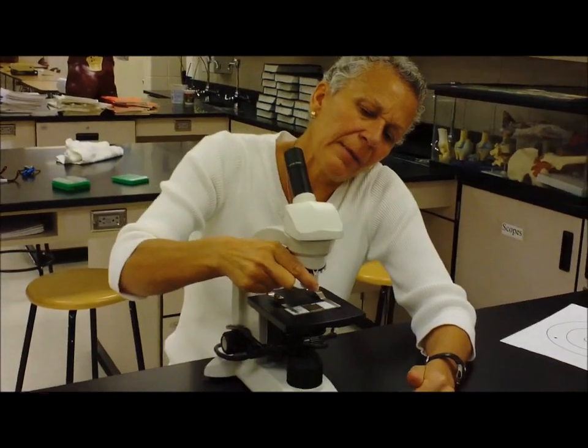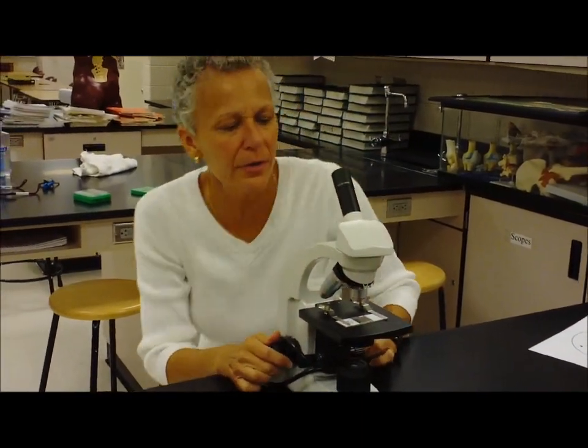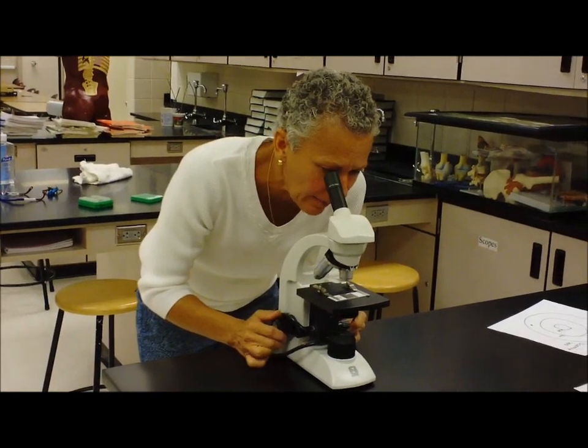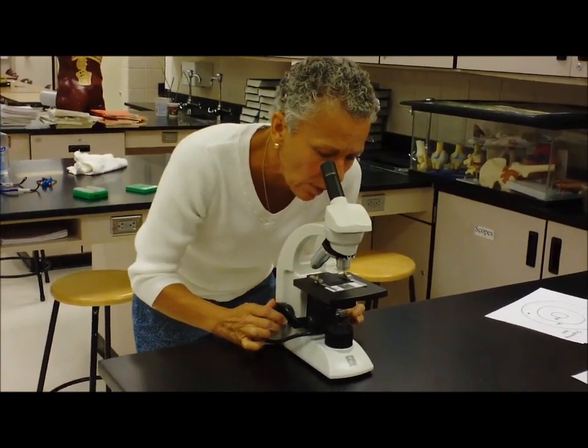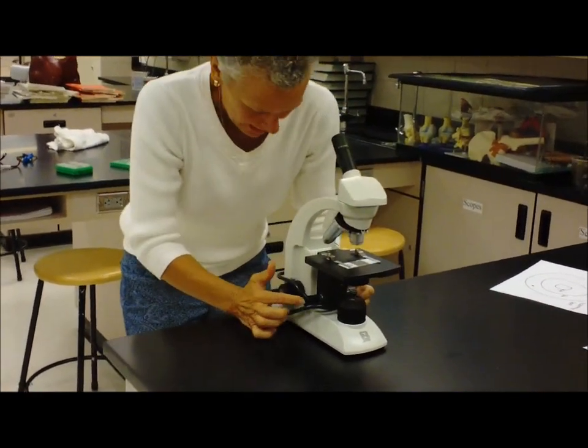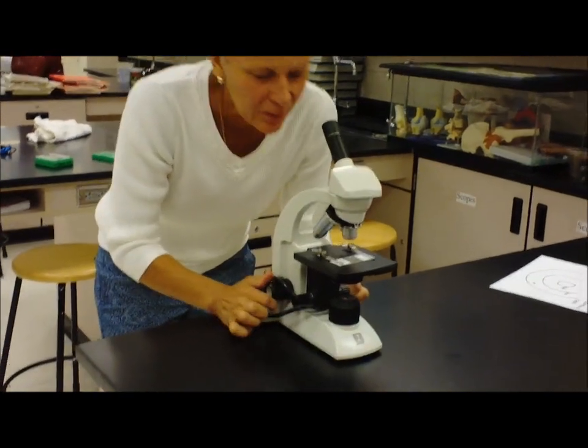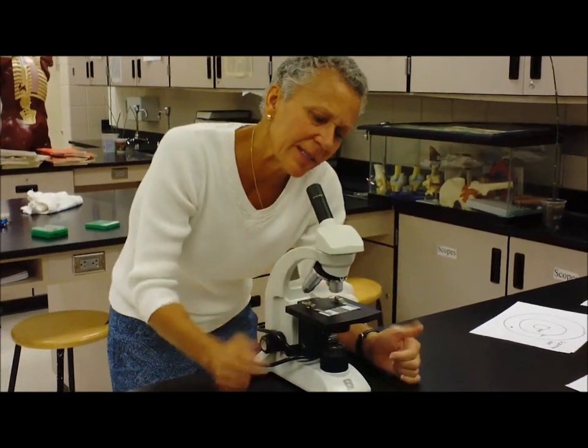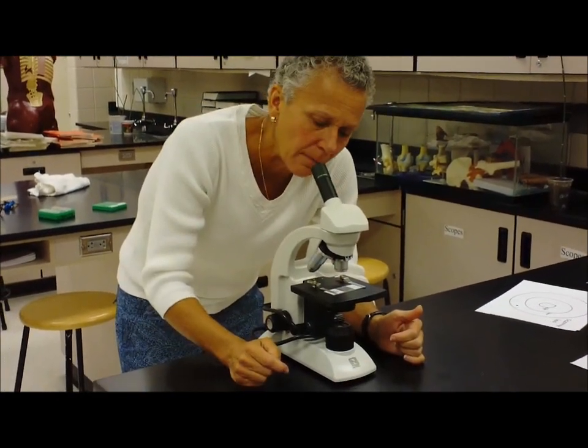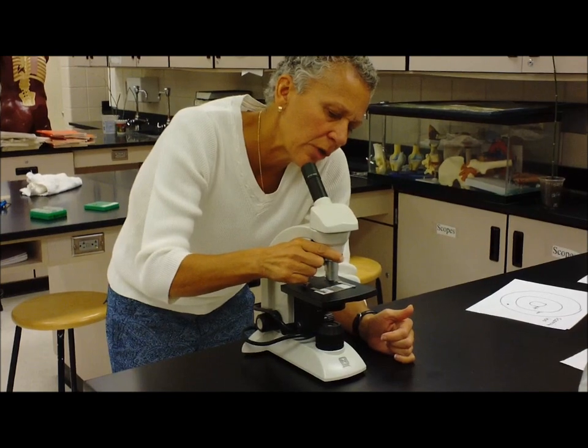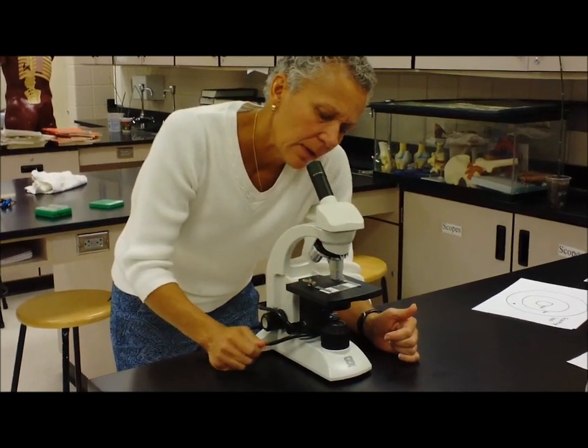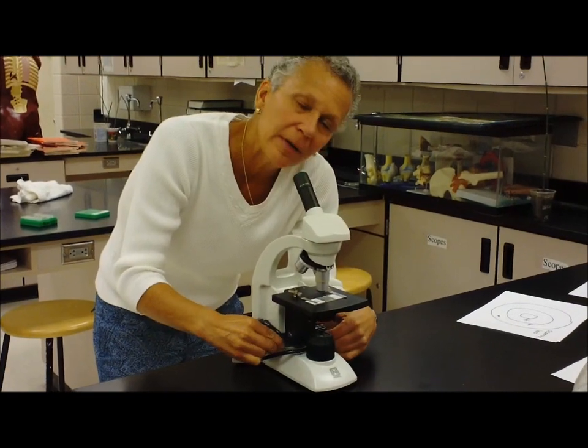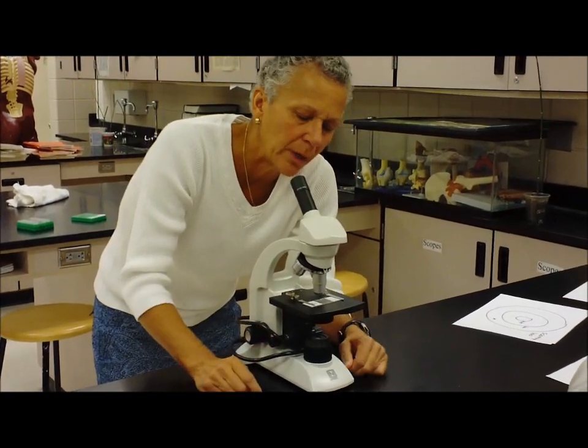Alright, so starting again I'm going to focus this under the scanning lens. I want to keep just one eye as I'm looking at my object. And I can use both the coarse adjustment knob and the fine adjustment knob to focus my item. Once I've focused it, I want to make sure it's centered in my field of view. Then I'm going to switch to the low power lens. And hopefully all I have to use is the fine adjustment knob to make my object look really clear.